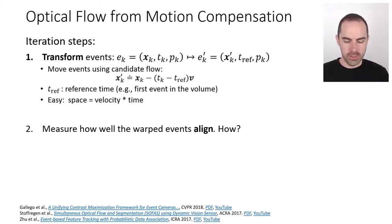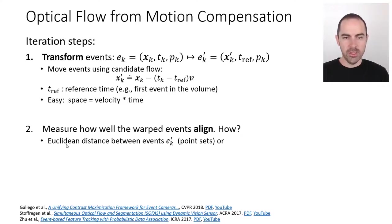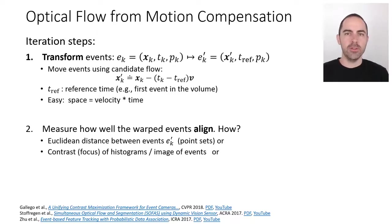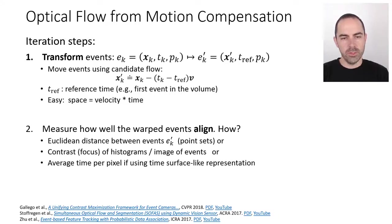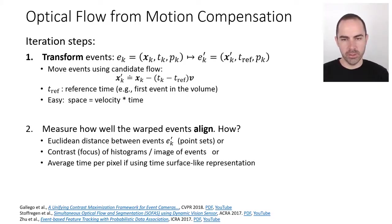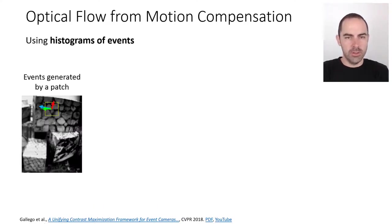How well the warped events align depends on the representation. Using a histogram of events, you can measure contrast or edge sharpness — how thick or thin the edges are. Using point sets, you measure the Euclidean distance between event pairs. Using time-surface-like representations, you minimize the average timestamp per pixel. There are many ways to define these focus measures.